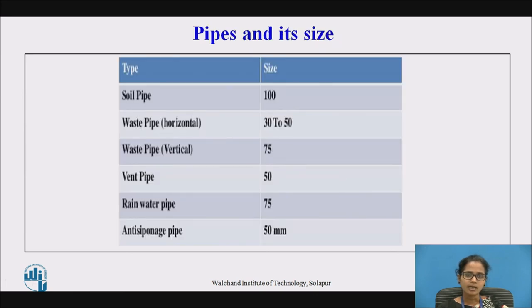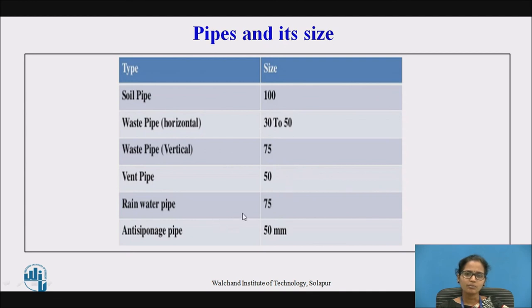Pipes and their types. There are various pipes available and their sizes are specified in the table. The soil pipe size should be around 100 mm. The waste pipe size is 30 to 50 mm. The waste water pipe is 75 mm. The vent pipe, used for circulation of air, is around 50 mm. The rain water pipe should be 75 mm. And the anti-siphon pipe should be 50 mm.